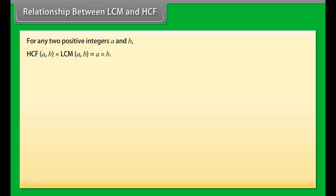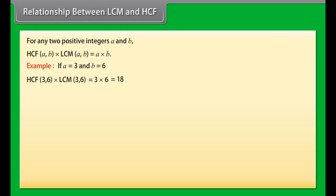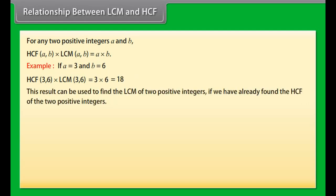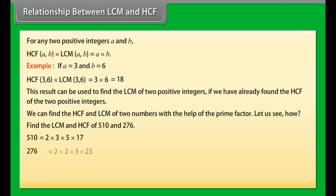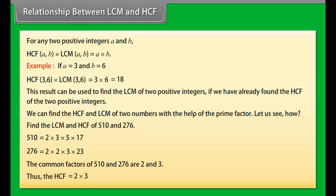Relationship between LCM and HCF: For any two positive integers a and b, HCF(a,b) × LCM(a,b) = a × b. For example, if a = 3 and b = 6, then HCF(3,6) × LCM(3,6) = 3 × 6 = 18. Now let us find the LCM and HCF of 510 and 276 using prime factorization: 510 = 2 × 3 × 5 × 17, and 276 = 2 × 2 × 3 × 23. The common factors of 510 and 276 are 2 and 3, so HCF = 2 × 3 = 6.